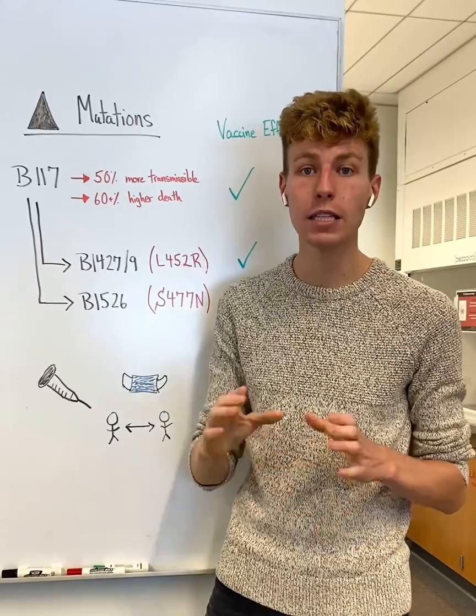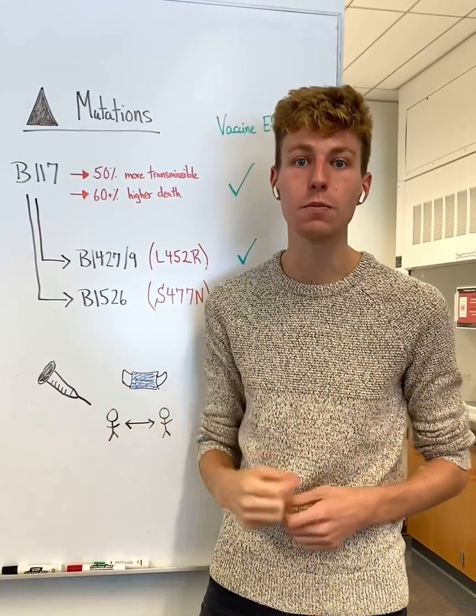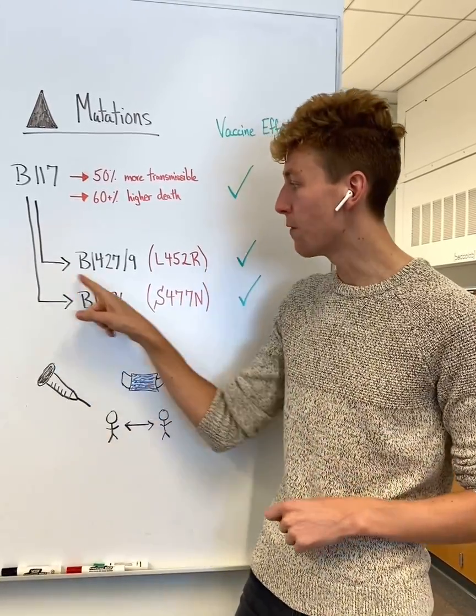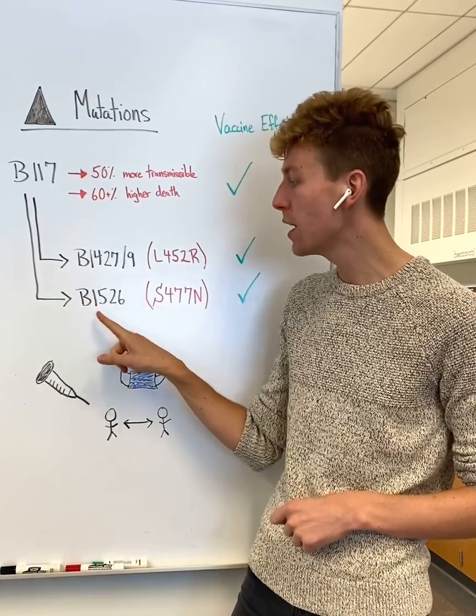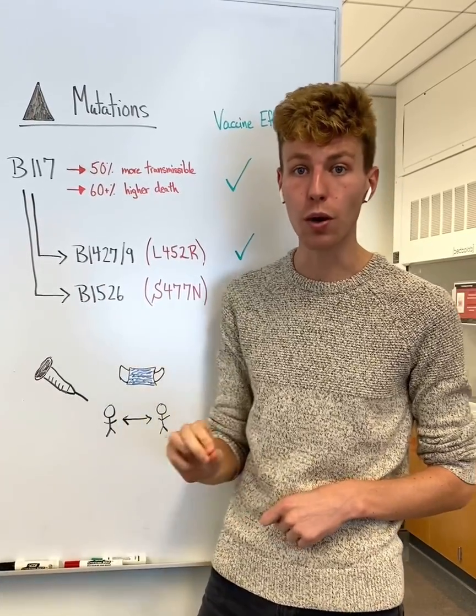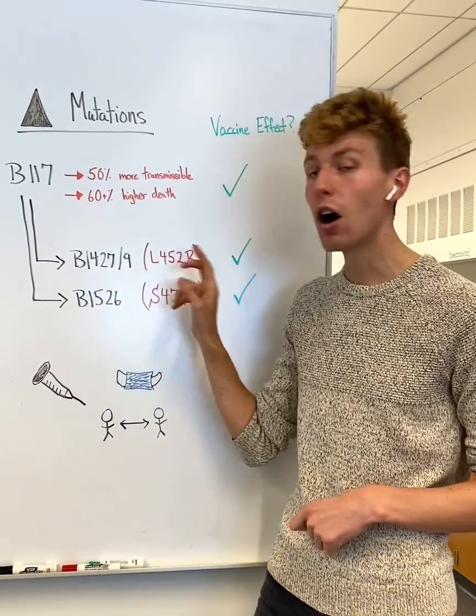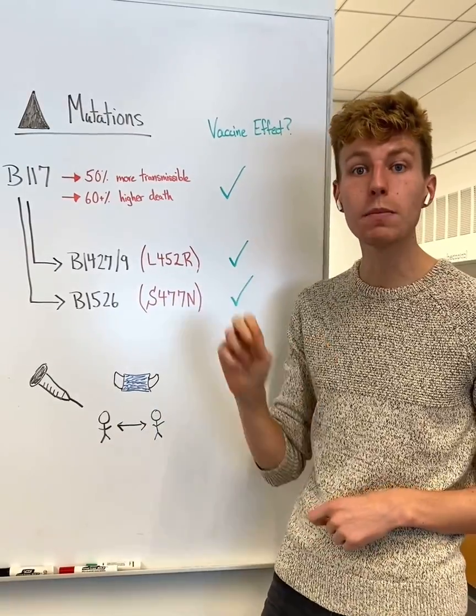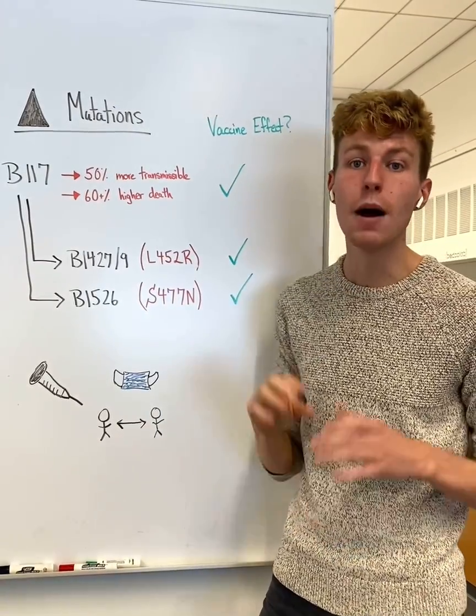However, this variant has picked up additional mutations as it's been circulating in the U.S. The first identified in California and the second identified in New York. Now, both of these variants also have been shown to be neutralized by antibodies produced by the vaccines.